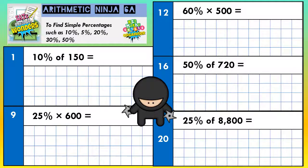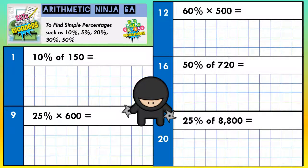Welcome, Arithmetic Ninjas, to finding simple percentages such as 10%, 5%, 20%, 30%, 50%. Question number one: 10% of 150. Now, 10% is like a master key — it unlocks a lot of doors. So let's just explore how to find 10%.